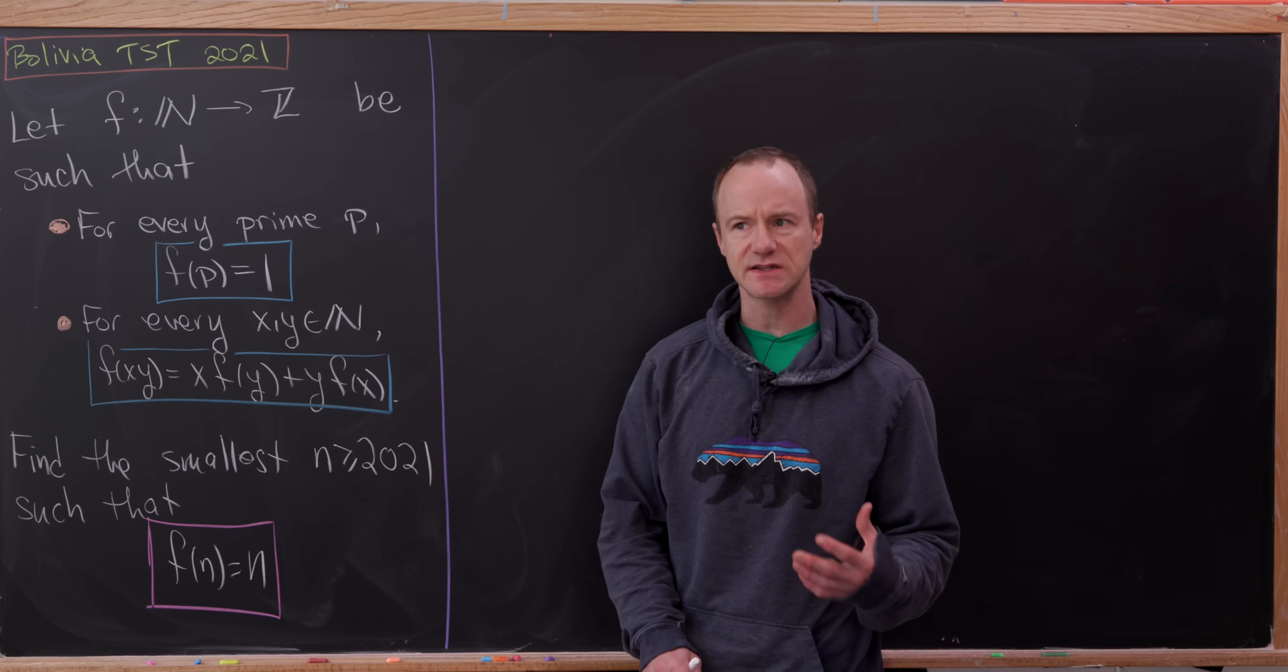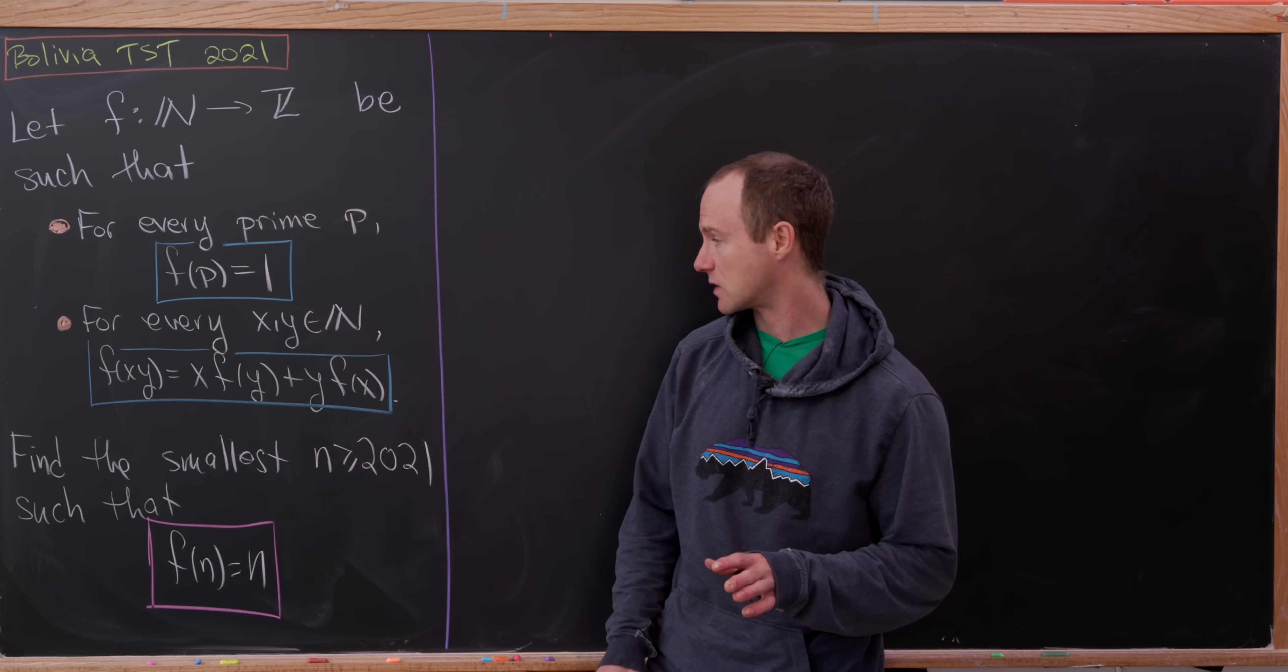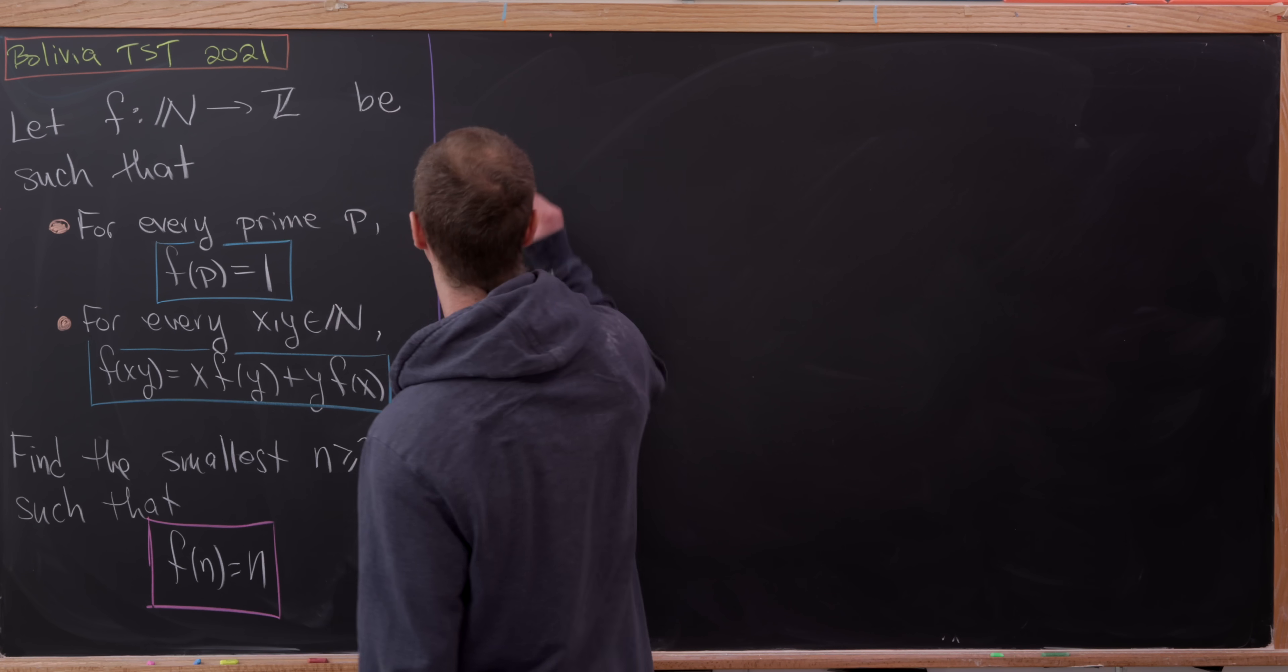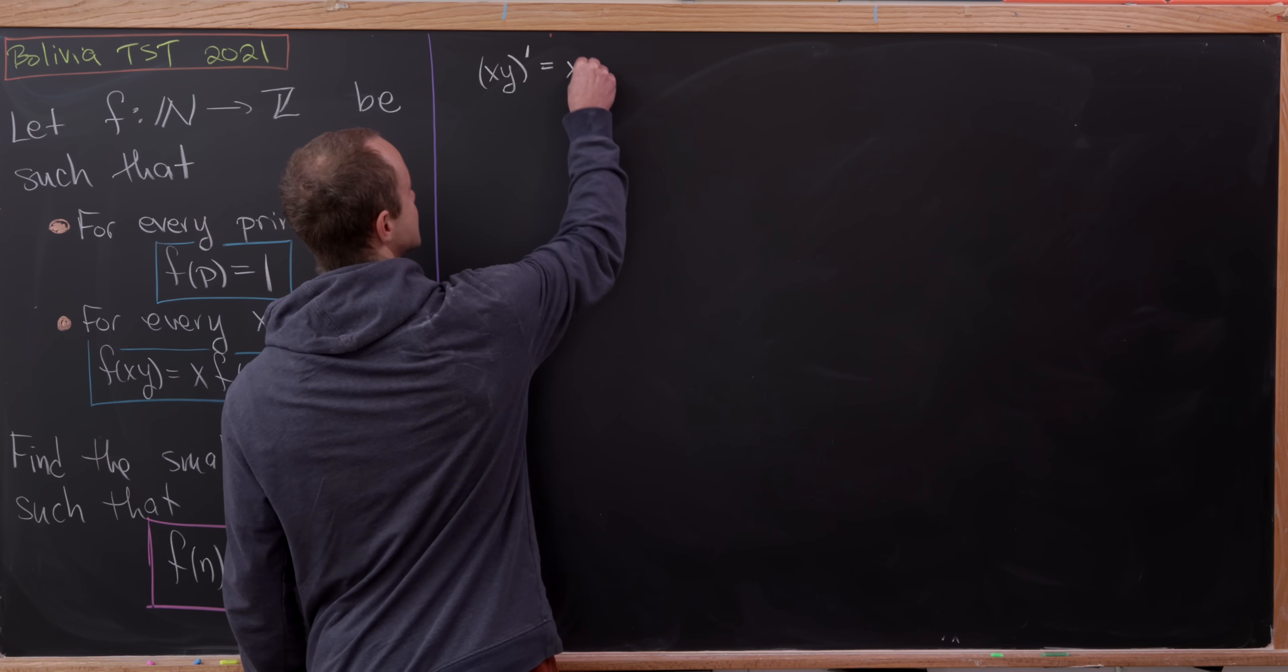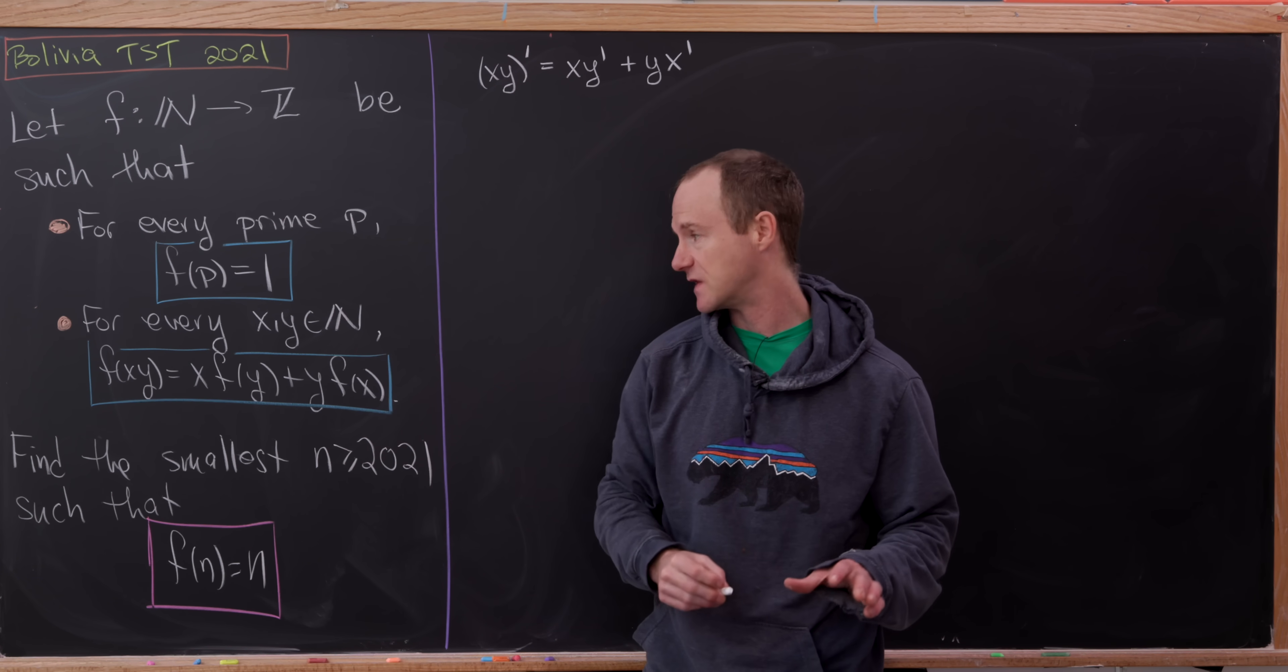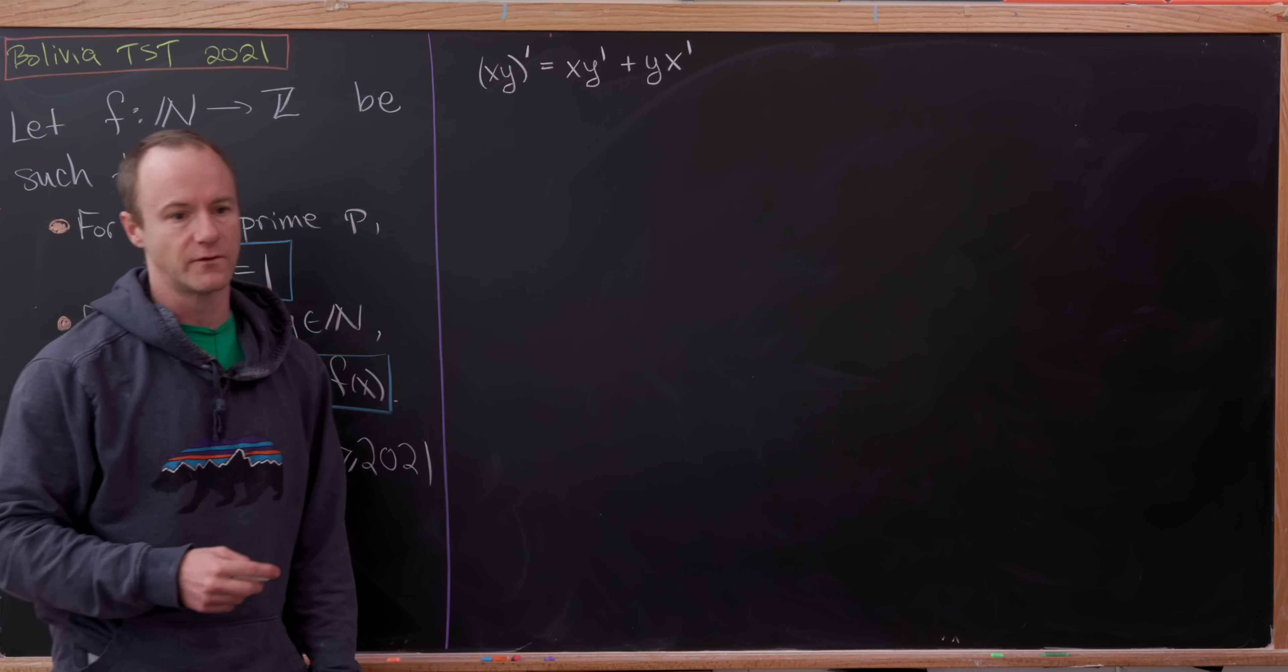And this really gets to the reason that I said that this was like an arithmetic derivative. Because if we look at this equation right here, that looks suspiciously similar to the product rule for derivatives of functions. For instance, if we were to rewrite this as (xy)' equals x·y' plus y·x', where the prime of these objects is the same thing as evaluating it at f.